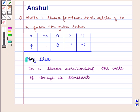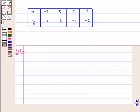With this key idea, let us proceed to the solution. We are given an input-output table of x and y values and we have to find the linear relationship between x and y.